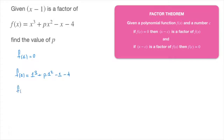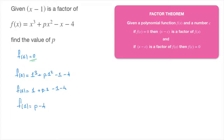That's f of 1 equals 1 cubed, which is just 1, plus p times 1 squared, so that's plus p times 1, minus 1 minus 4. Gathering all the like terms, we find f of 1 must equal p minus 4. But the factor theorem tells us that f of 1 must equal 0, so p minus 4 must equal 0, which leads to p equals 4.